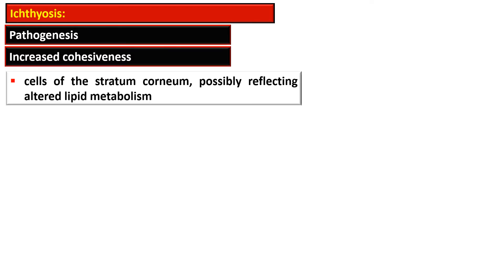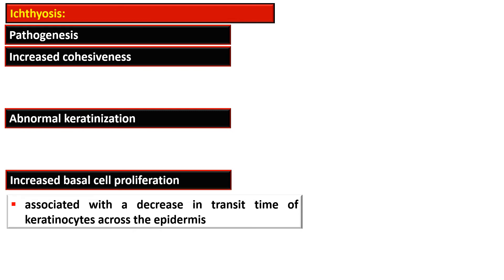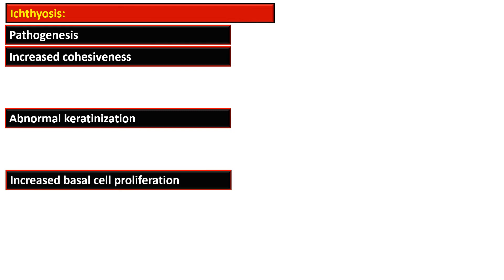There are three processes involved in the pathogenesis of ichthyosis. First is increased cohesiveness — in the stratum corneum, cells are cohesive due to altered lipid metabolism. Second, abnormal keratinization is due to impairment in the formation of tonofilaments and keratohyalin synthesis, resulting in excessive cornification. Third, increased basal cell proliferation is associated with decreased maturation time or transit time of keratinocytes toward the upper layers.